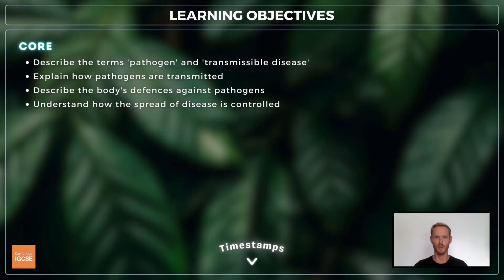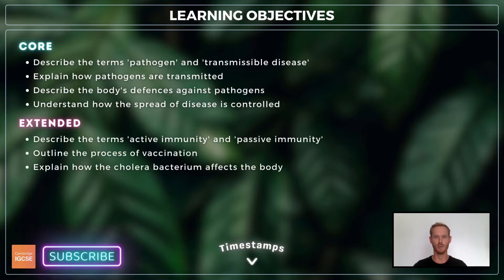For topic 10.1 you need to know about pathogens, disease transmission, the body's defence systems, and control measures used to prevent the spread of disease. For extended, you also need to understand the terms active and passive immunity, the process of vaccination, and the bacterial disease cholera.